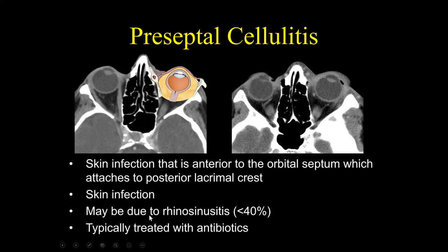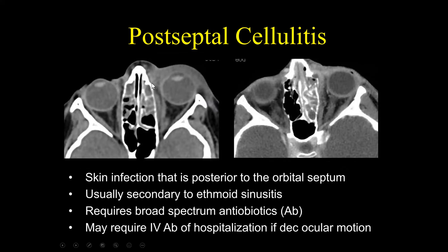Preseptal cellulitis is typically due to a skin infection, may be associated with rhinosinusitis in up to 40% of cases, and is typically treated with antibiotics alone. On the other hand, if an infection extends posterior to the posterior lacrimal crest, this results in postseptal cellulitis — a skin infection posterior to the orbital septum, usually secondary to adjacent ethmoid sinusitis, requiring broad-spectrum antibiotics. If a patient has decreased ocular motion and you identify postseptal cellulitis, these patients are typically admitted and treated with IV antibiotic therapy. That is why it is important to know exactly where the orbital septum is and the full extent of disease.